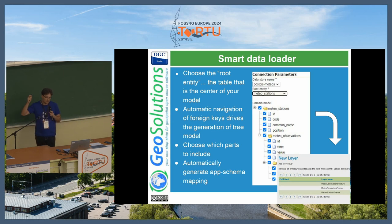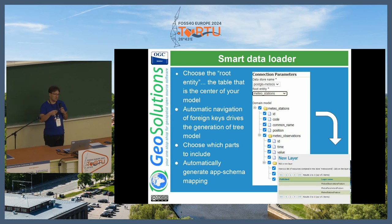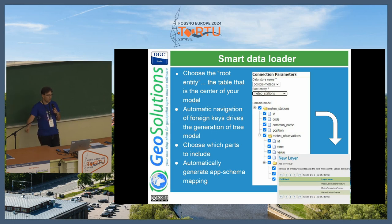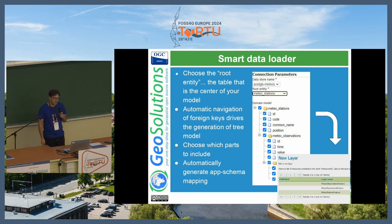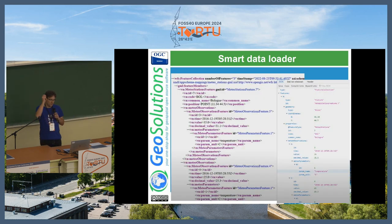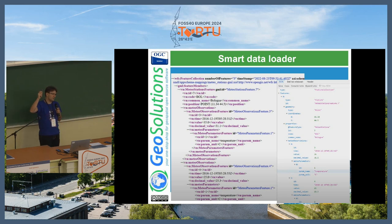Once you decide on the root entity and which parts you want to publish, it creates an application schema mapping and shows you the entities it found — the root one and the satellite ones. You choose which ones to publish, click publish, and you already have your valid complex GML ready for consumption. This is one example of going out directly with the GML or complex GeoJSON mapped straight out of your database structure.